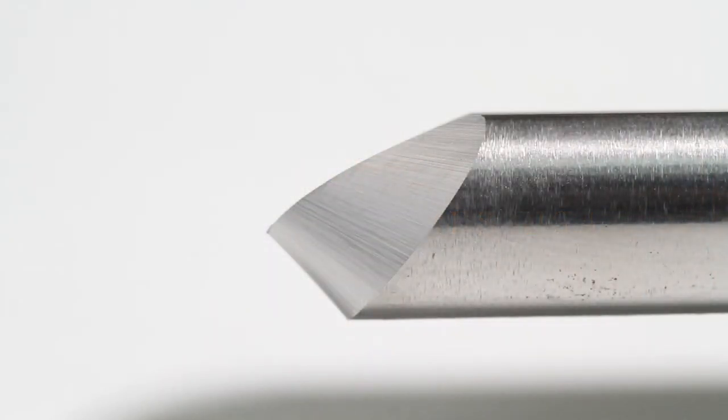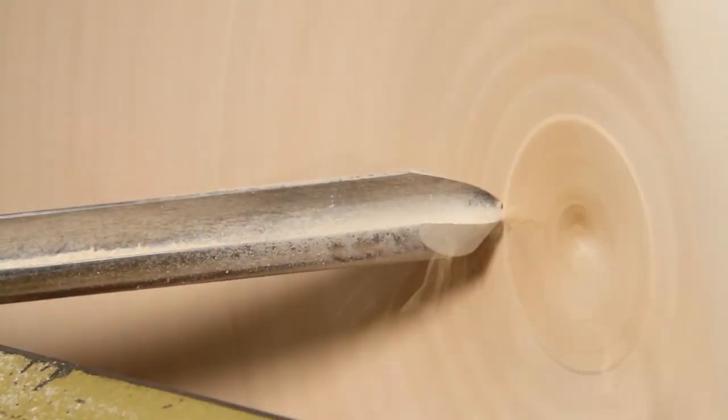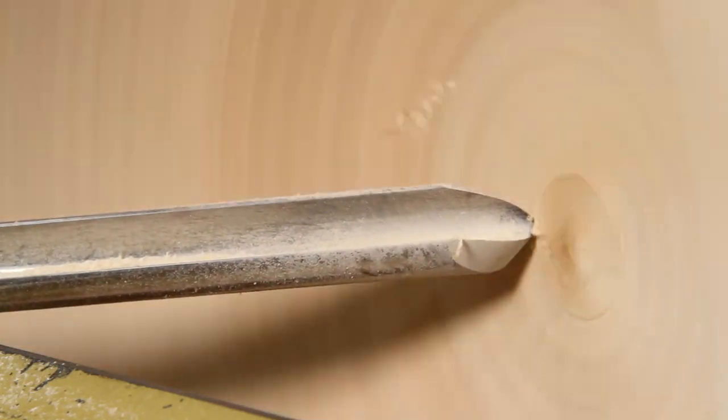When it comes to bowl gouges, we recommend a 50-degree single bevel grind, as it provides maximum control while allowing you to turn a wide variety of bowls using a single tool.